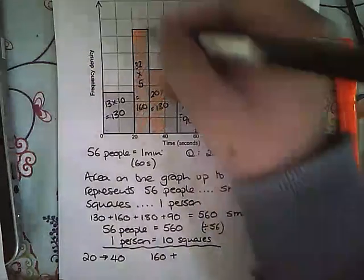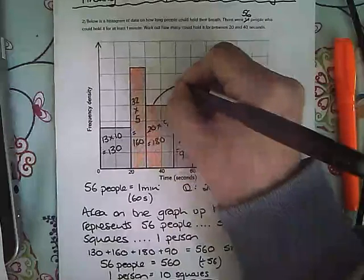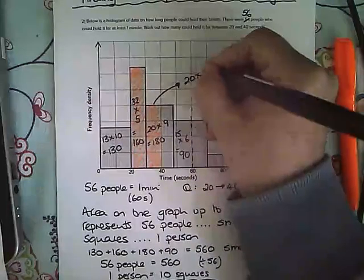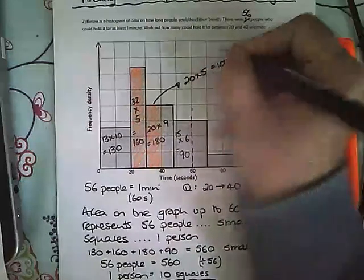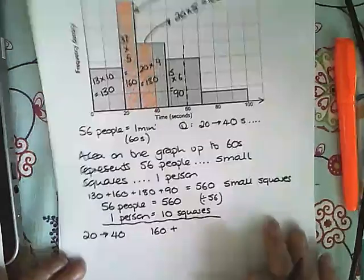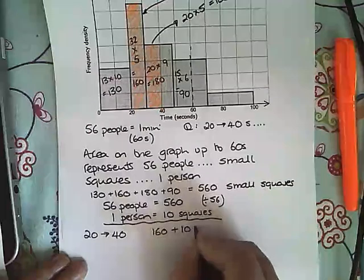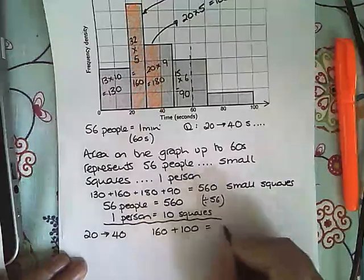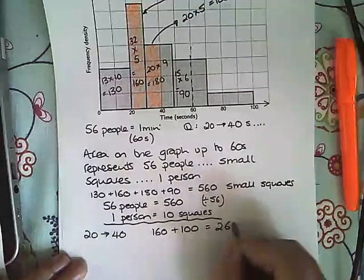20 times 5 is 100, and this one here we'd already worked out was 160. So when we add that together, we get 260 small squares.